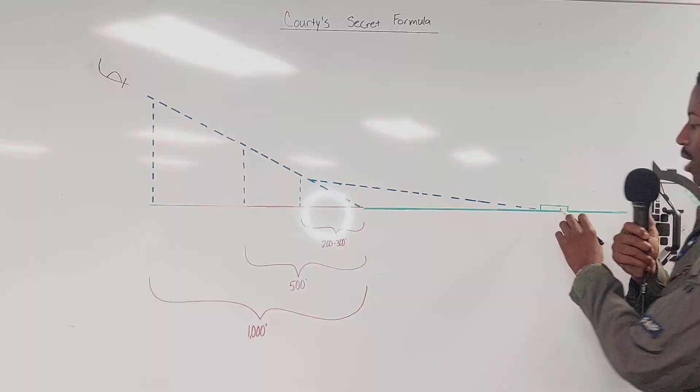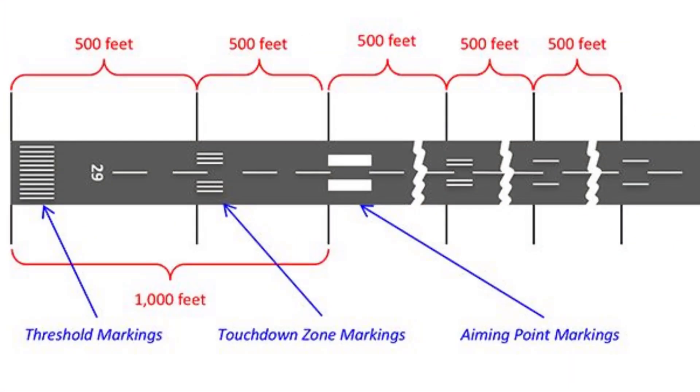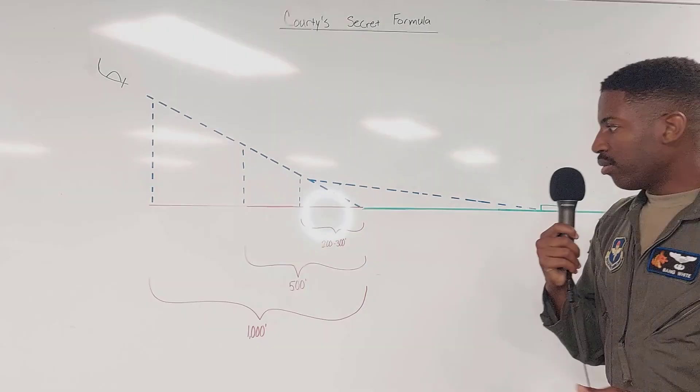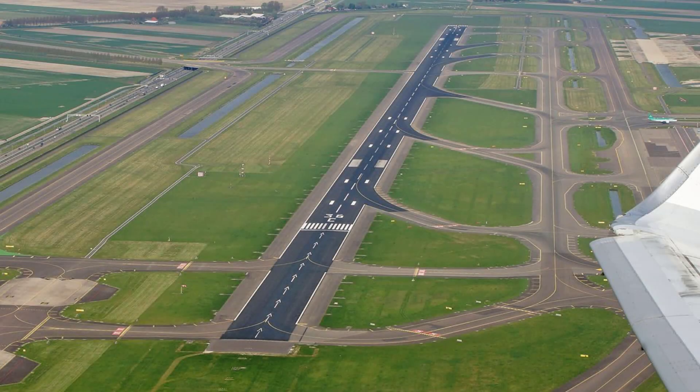Most every runway will have captain's bars out here, which is a reference to tell you that you're a thousand feet down the runway. At the perch, we look at those captain's bars and eyeball the distance from the captain's bars to the threshold.